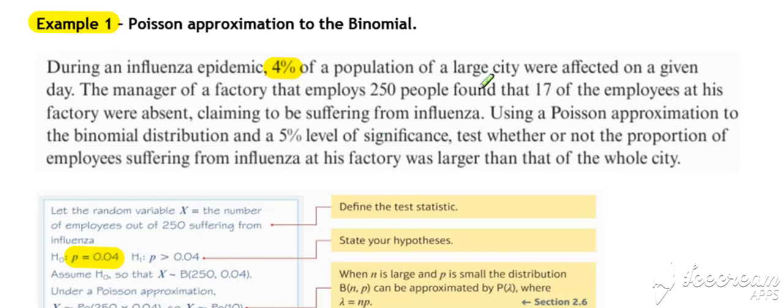We have 250 people, so that's our n value. Found that 17 of these employees were absent, so that's our test statistic. And it says test at the 5% level whether or not the proportion of employees was larger than for the whole city. So we've got our alternative as a greater than.